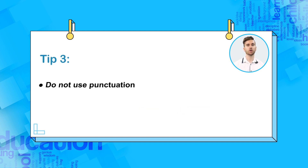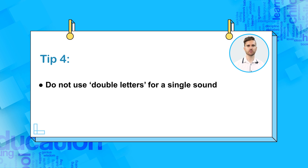Tip three: do not use punctuation, even if you are transcribing a paragraph with several full stops and commas. Tip four: do not use double letters for a single sound. English spelling is complex and sometimes arbitrary. If there is only one sound, you must only transcribe one symbol. Thus, there are two written T's in 'bottle', but only one T symbol in its IPA transcription.